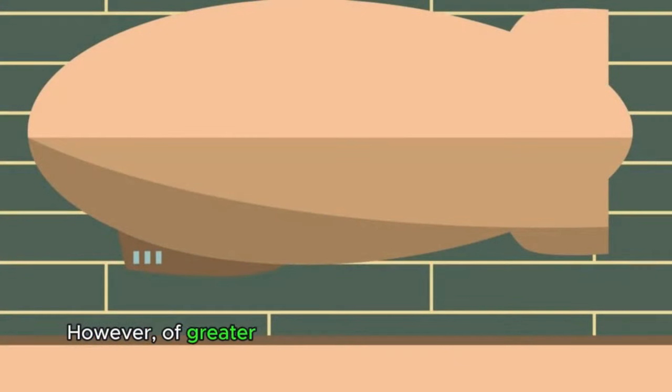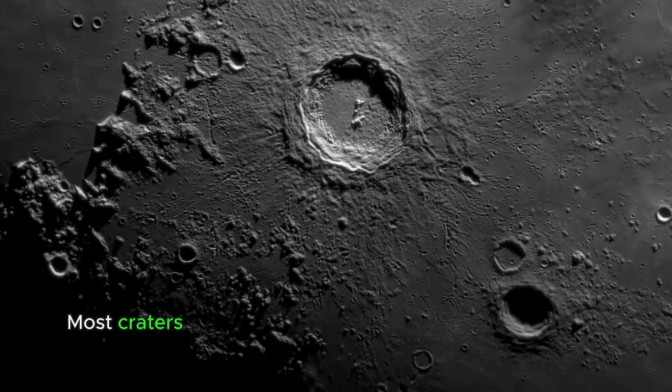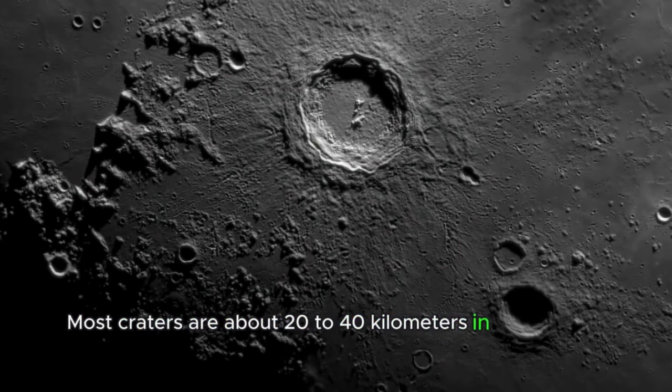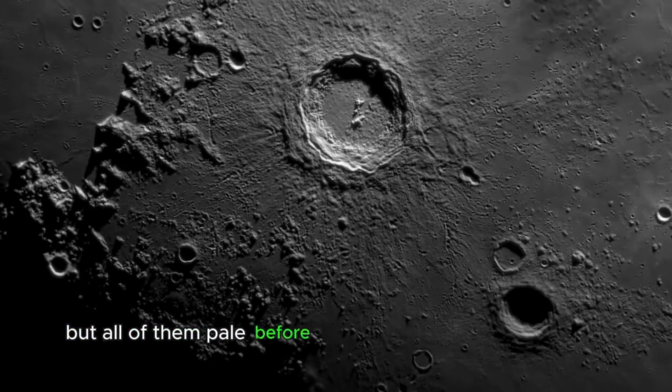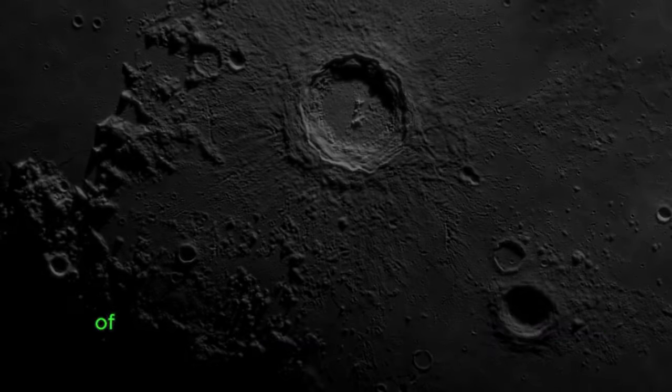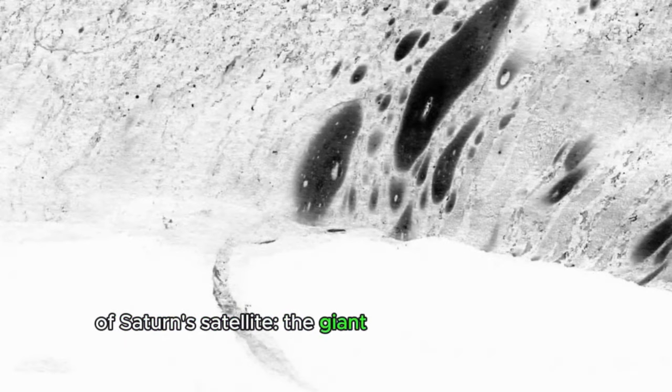However, a greater interest is the surface of the satellite. Mimas is almost entirely covered by huge craters. Most craters are about 22-40 kilometers in diameter in both hemispheres. But all of them pale before the main distinguishing feature of Saturn's satellite, the giant Herschel crater in the northern part of Mimas.